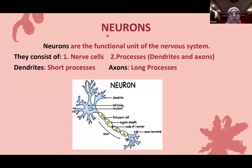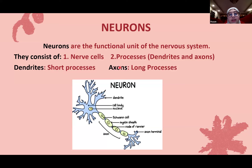Neurons are the functional unit of the nervous system. They consist of nerve cells and their processes — dendrites and axons. A memory trick: 'dendrites' is a longer word, so they are the short processes; 'axons' looks shorter, so axons are the long processes. The axon ends at axon terminals.